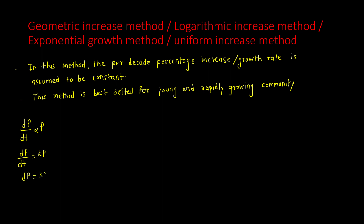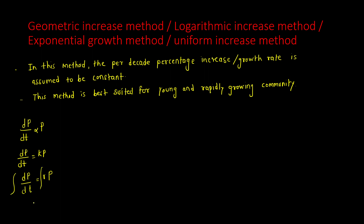We can write this as dP = K·P·dt. Here we use the constant R instead of K (since K was used in the arithmetic increase method), giving dP/dt = R·P. Integrating both sides, we shift P to the left and dt to the right: the integral of dP/P equals the integral of R·dt.